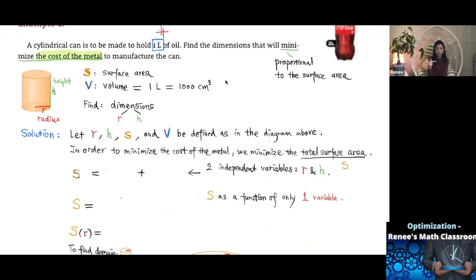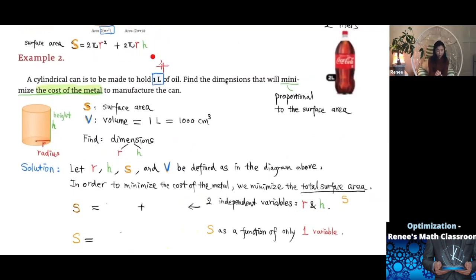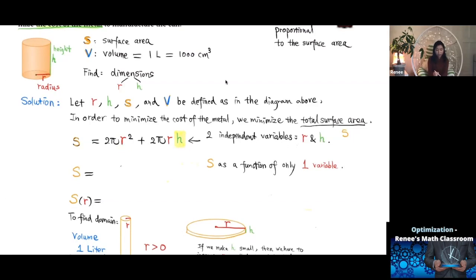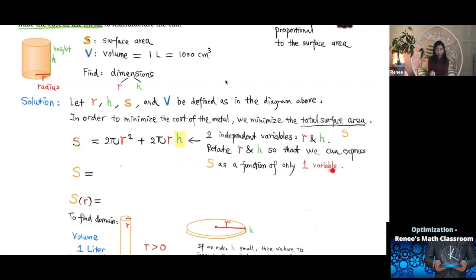Next, we express the variable we are optimizing on the left side: S = 2π R² + 2π R H. Notice that S is expressed in terms of two independent variables, R and H. We would like to express S in terms of only one variable, either R or H, so we need to relate R and H.